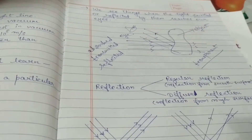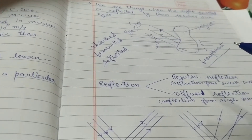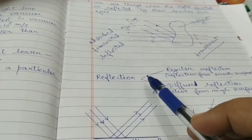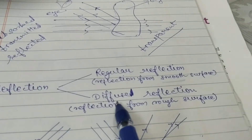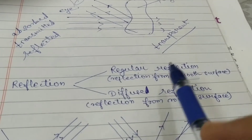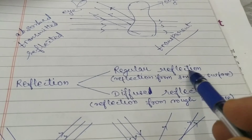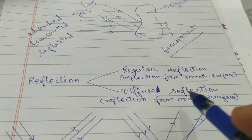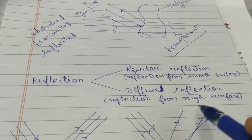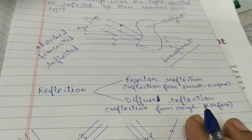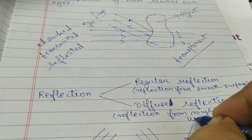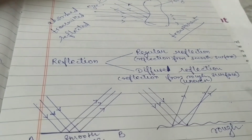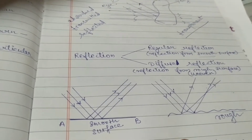Mainly in this chapter we study reflection, because the part of light that is reflected makes us able to see objects. Reflection is of two types: regular reflection and diffuse reflection. Reflection from a smooth surface is called regular reflection, and reflection from a rough or uneven surface is called diffuse reflection.